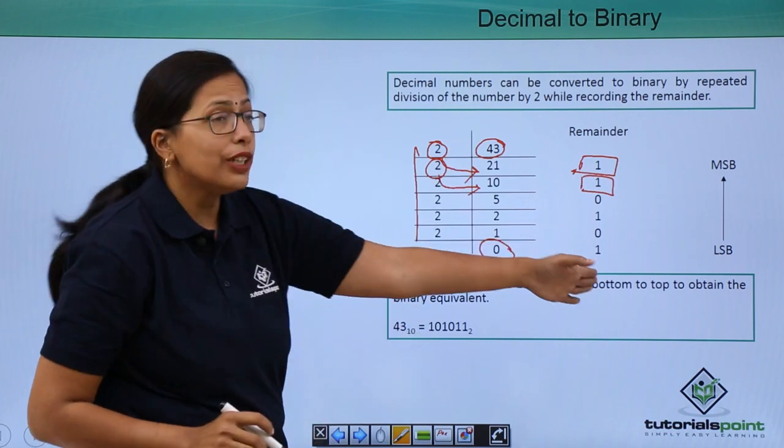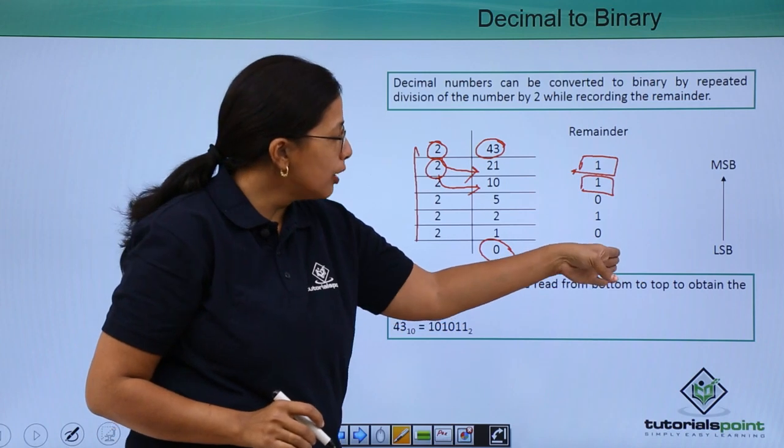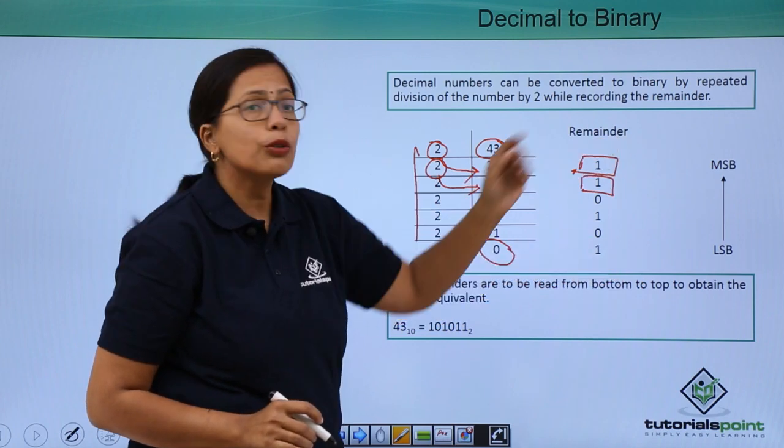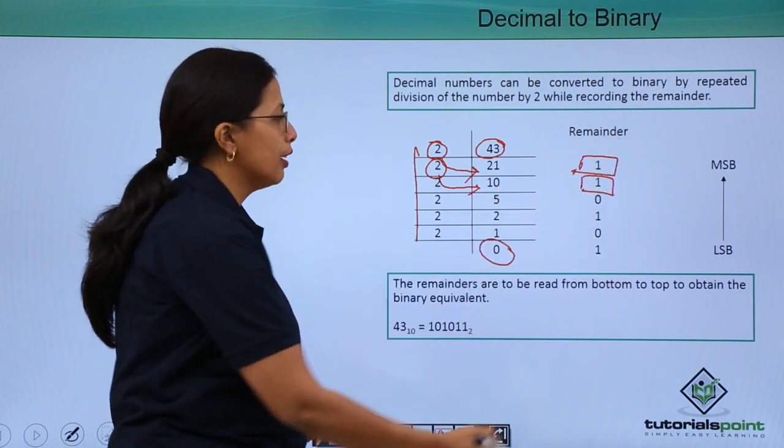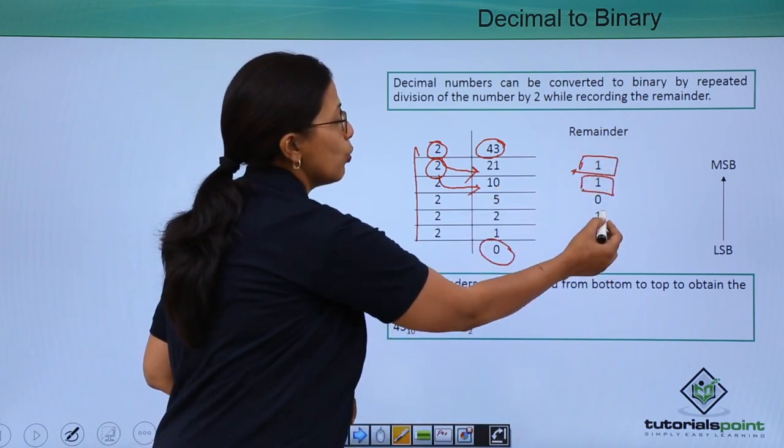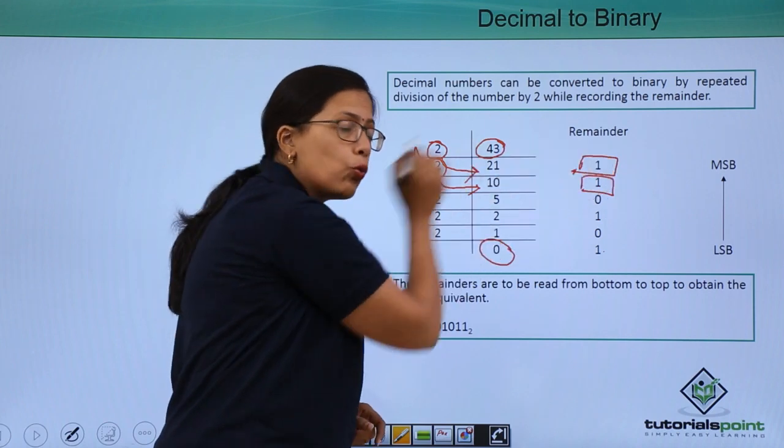Once I have completed this division, then I will read the remainder from the bottom digit to the top digit, the least significant bit to the most significant bit. Here, I am getting 1, 0, 1, 0, 1, and 1.